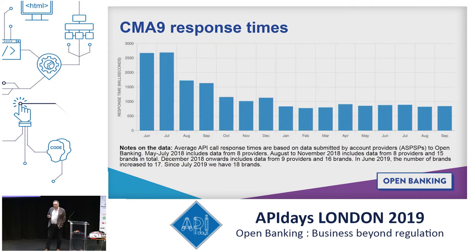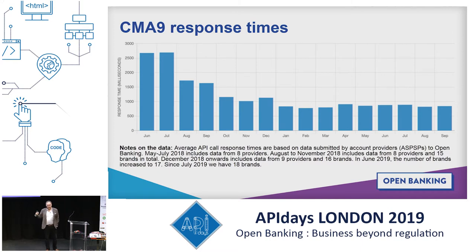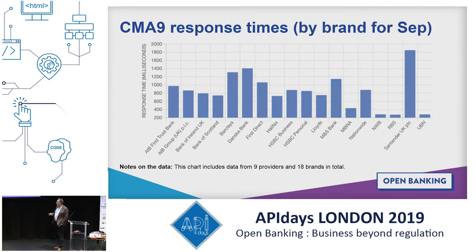When we look at response times, it's a better picture. The average response time was pretty terrible for a high-performing API in June last year — over two and a half seconds. It's getting a lot better — getting to under a second on average across the CMA 9. And if we look by brand you'll see a very interesting picture: there is an order of magnitude difference between the best performing and the worst performing.